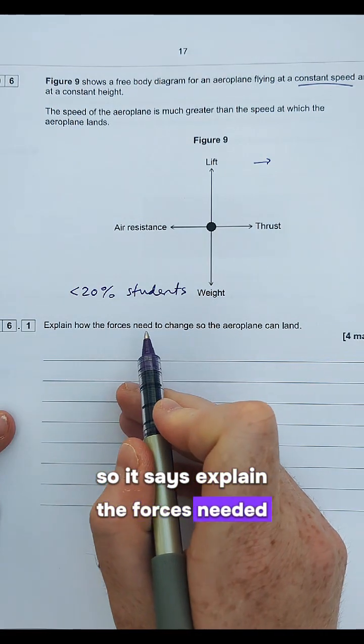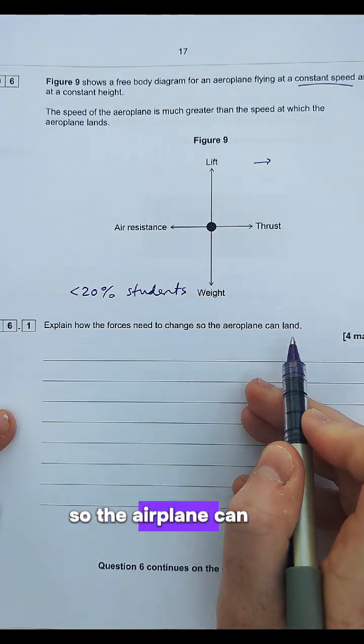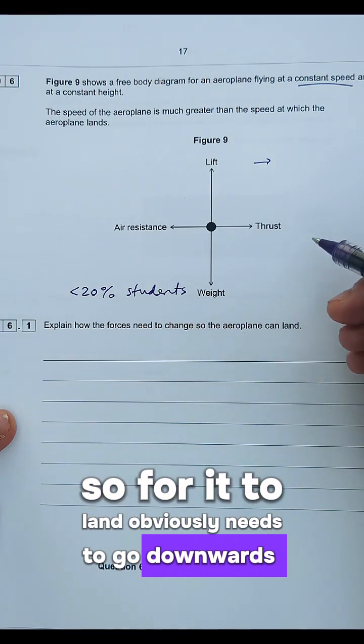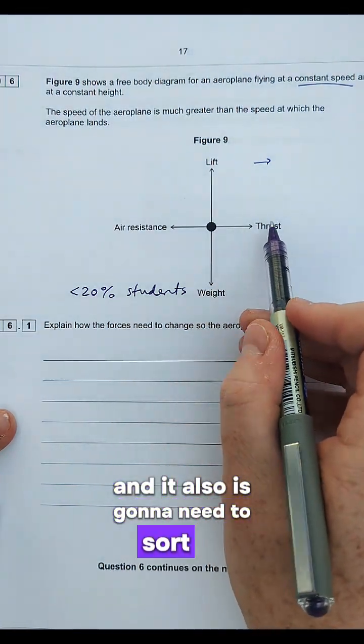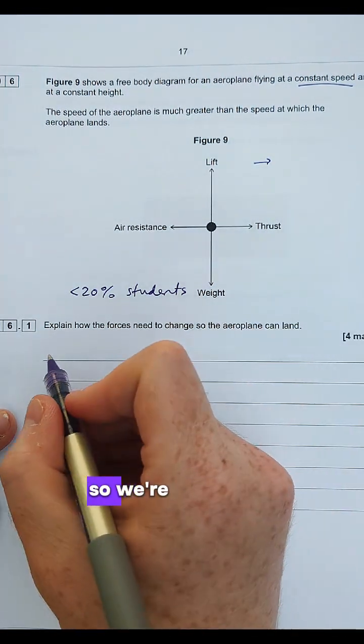So it says explain the forces needed to change so the airplane can land. So for it to land obviously needs to go downwards and it also is going to need to slow down a bit as well. So we're going to talk about that first of all.